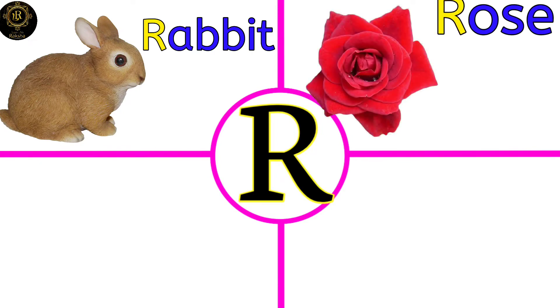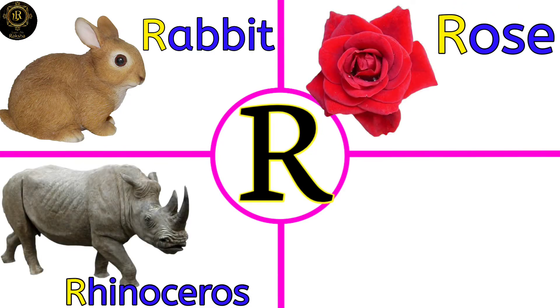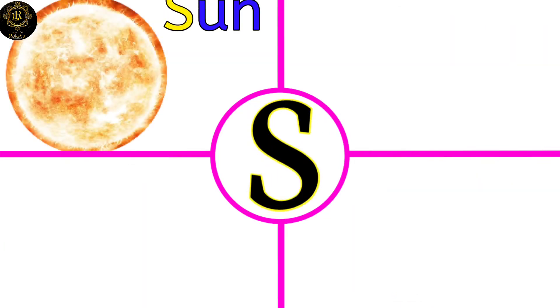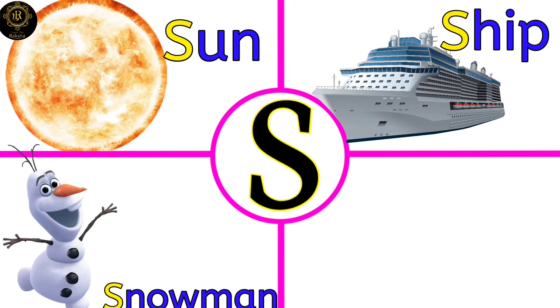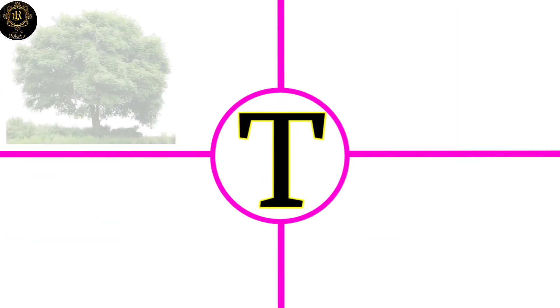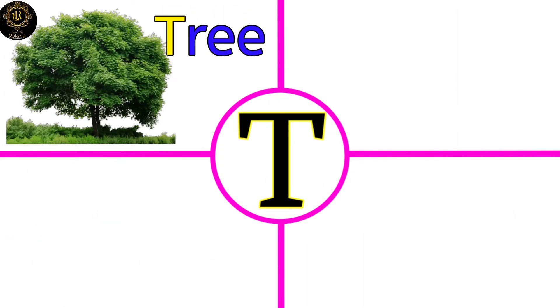Rose, Rhinoceros, Rainbow. S for Sun, Ship, Snowman, Snake.